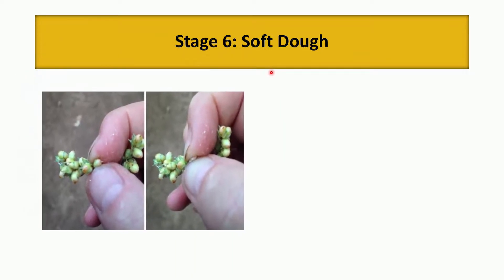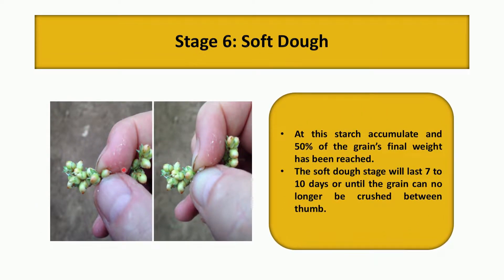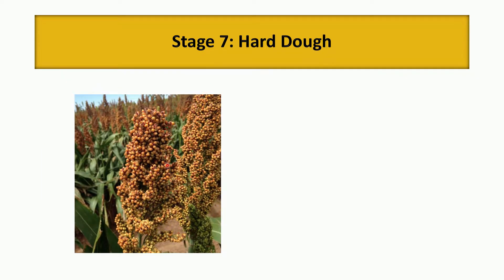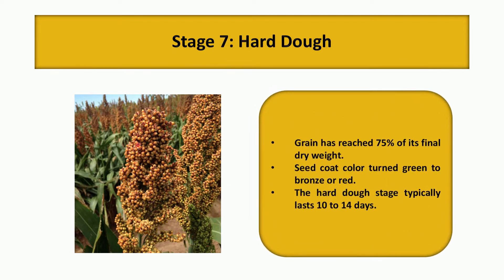The soft dough stage occurs when the grain has about 50 percent of the starch accumulated. If you press the grain between your thumb it will be crushed — that is the soft dough stage. It lasts seven to ten days. In the hard dough stage, grains reach maximum grain weight with 75 percent of the final dry weight reached. The grain cannot be crushed between the thumbs and the seed color changes from green to bronze or red. The hard dough stage lasts 10 to 14 days.